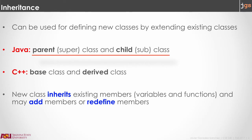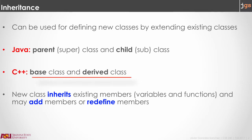In Java, the original class was called the parent class or the super class, and the new class was called a child or a subclass. In C++, the original class is going to be called the base class, and the new class is going to be called a derivative class — so, base and derivative classes.